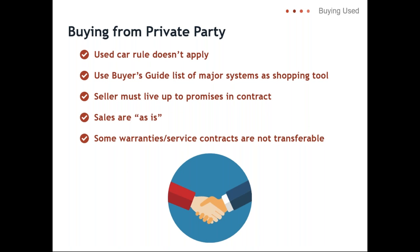Private party sellers generally aren't covered by the used car rule and don't have to use a buyer's guide. You can ask the seller if you can have the vehicle inspected by your mechanic — if they refuse, that's a red flag. Private party sales are typically as-is and not covered by an implied warranty, and many states don't require individual sellers to ensure their vehicle will pass inspection.